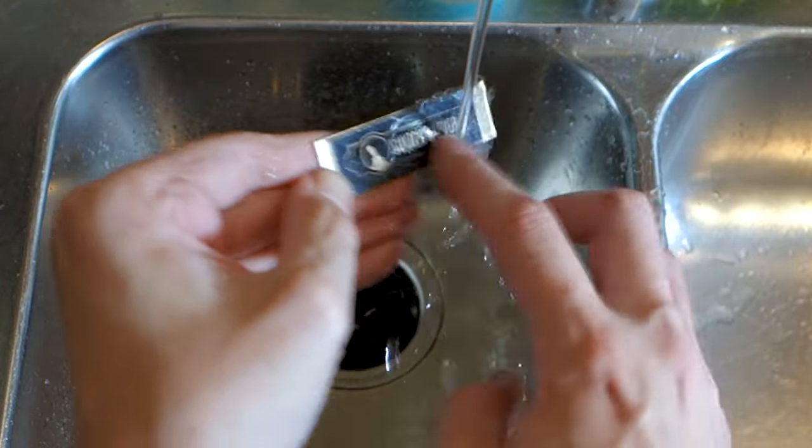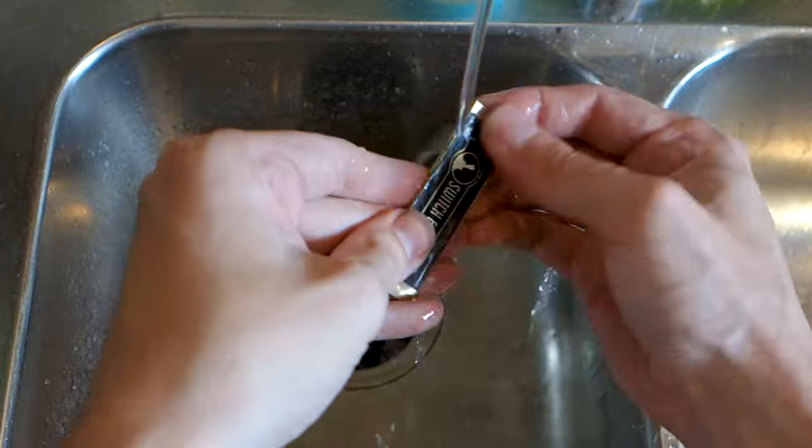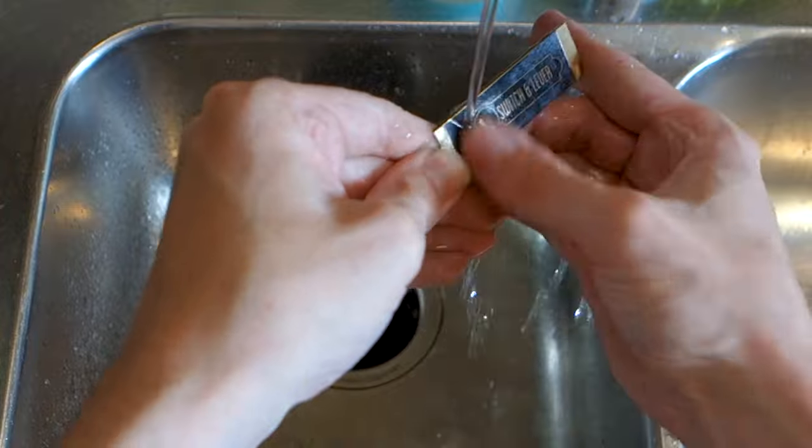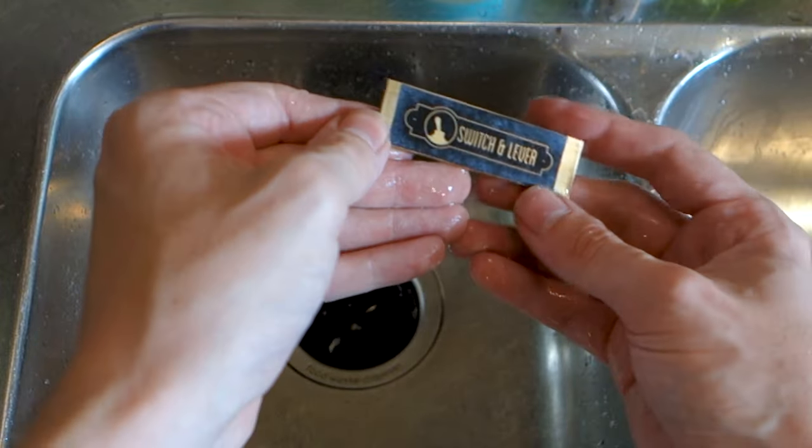There are commercial versions of this method as well, where you print on a transparency and use UV light to cure the resist onto the brass. But as far as DIY methods go, this is probably the easiest.